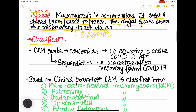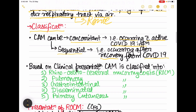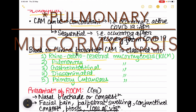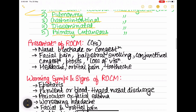CAM can be classified as concomitant — occurring with COVID-19 infection — or sequential — occurring after recovery from COVID-19. Based on clinical presentation, CAM is classified into: rhino-orbito-cerebral mucormycosis (ROCM), pulmonary type, gastrointestinal type, disseminated type, and primary cutaneous type.